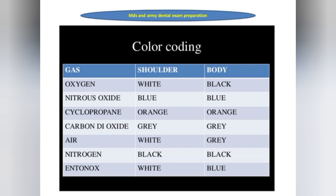Color coding for pharmacological gases: Oxygen — black body, white shoulder. Nitrous oxide — blue shoulder and body. Cyclopropane — orange shoulder and body. Carbon dioxide — gray. Air — gray body, white shoulder. Nitrogen — black. Entonox — white and blue body, white neck.